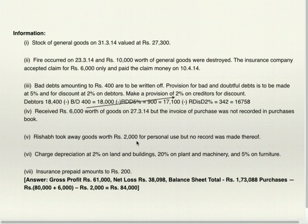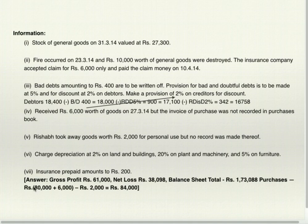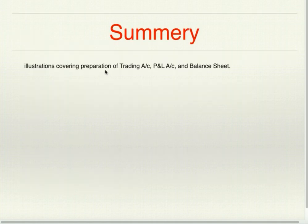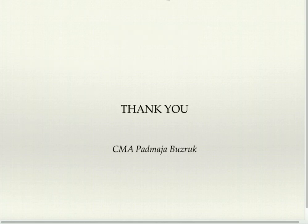Rishav took away goods worth 2,000 for personal use but no record was made — deduct from purchases and add to drawings. Charge depreciation: 2% on land and building, 20% on plant and machinery, and 5% on furniture — deduct from respective assets and debit to profit and loss account. Insurance prepaid 200 — deduct from insurance and show under assets. Now I want you to do all these unsolved questions, do it on your own and check whether the answer matches. In this video we have seen various illustrations covering preparation of trading account, profit and loss account, and balance sheet. Thank you.